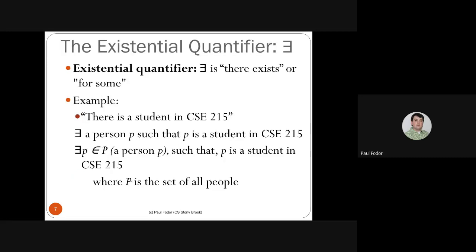The existential quantifier is the second quantifier, represented by the symbol ∃ (an inverted E), read 'there exists' or 'for some.' For example, 'there is a student in CSE 215': there exists a person P such that P is a student in CSE 215, where P comes from the set of all people.